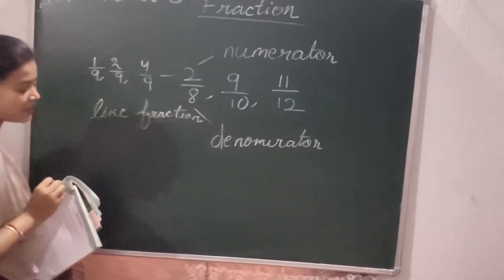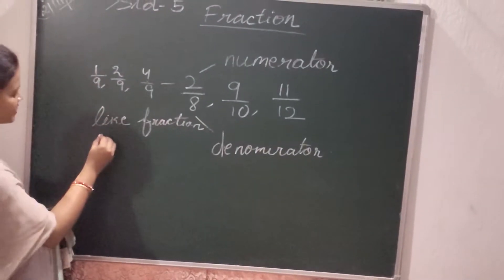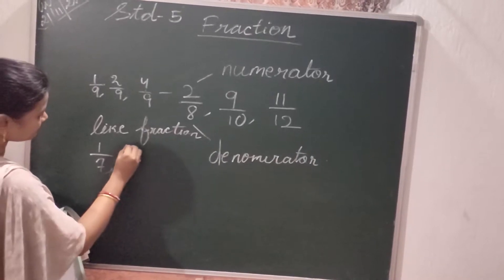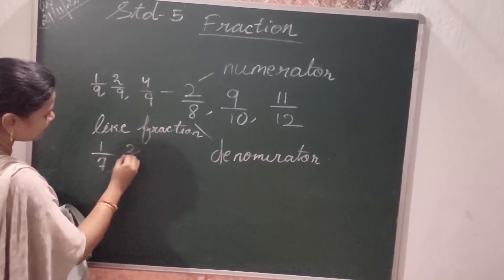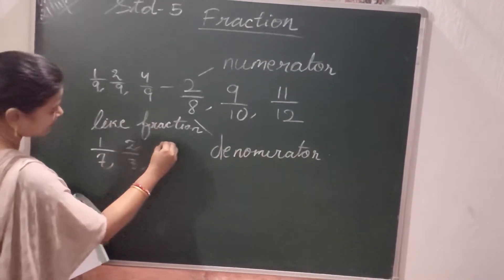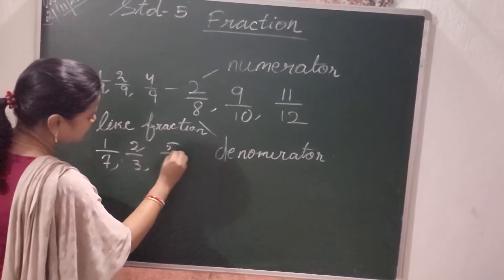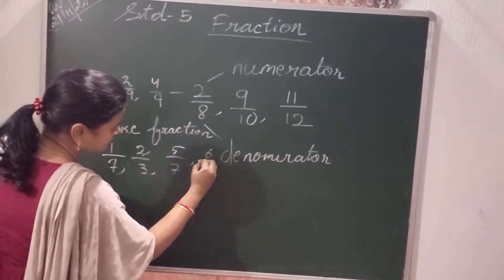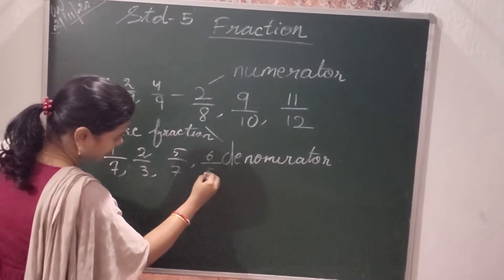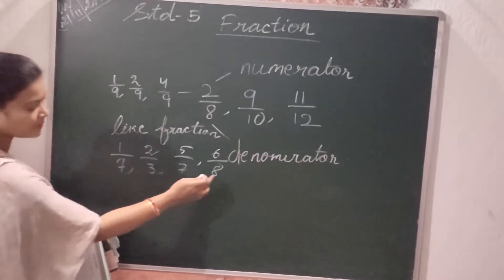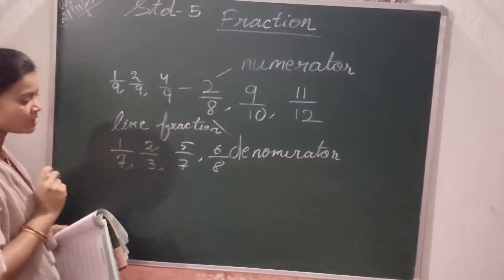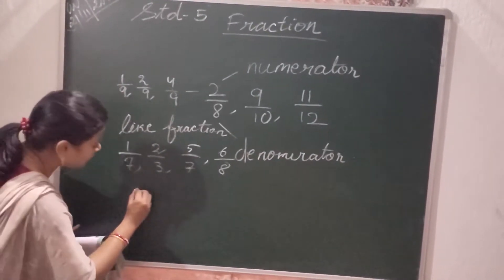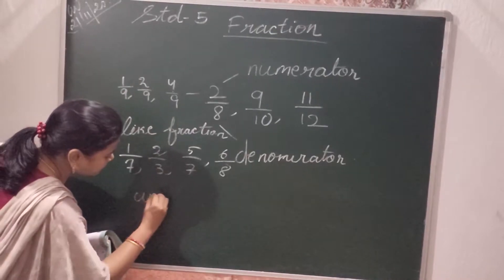In another case, some fractions like 1 by 7, 2 by 3, 5 by 7, 6 by 8 — in this case the denominators are not the same. So these fractions are called unlike fractions.